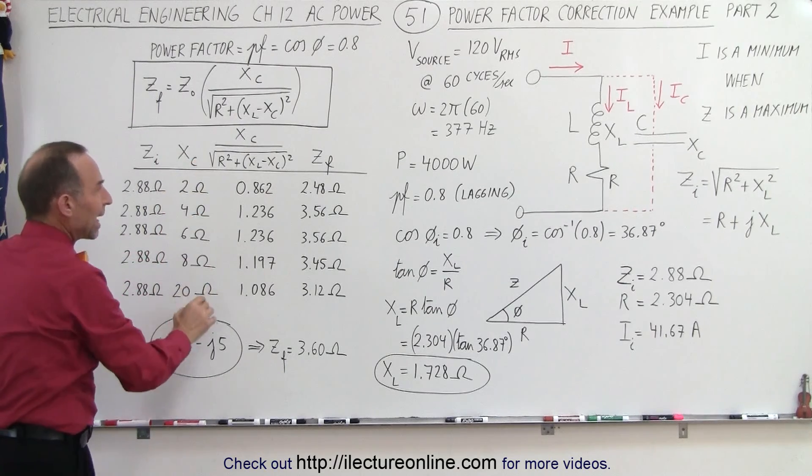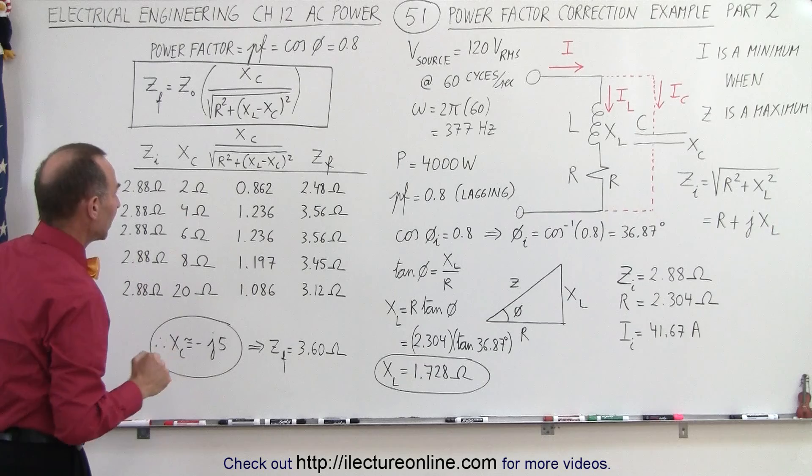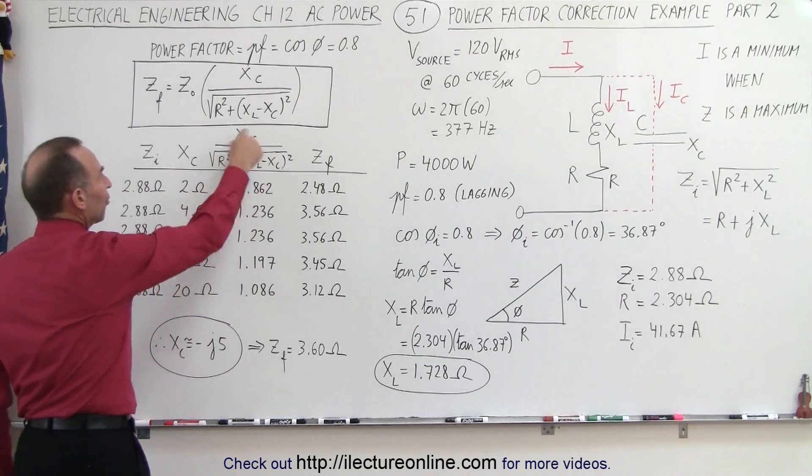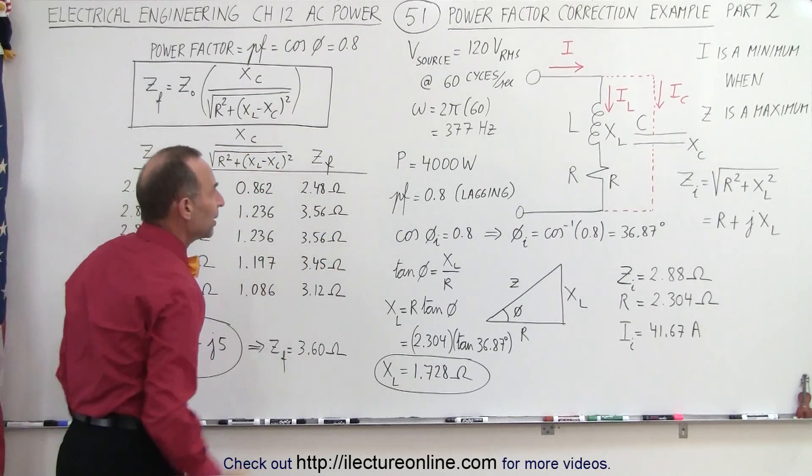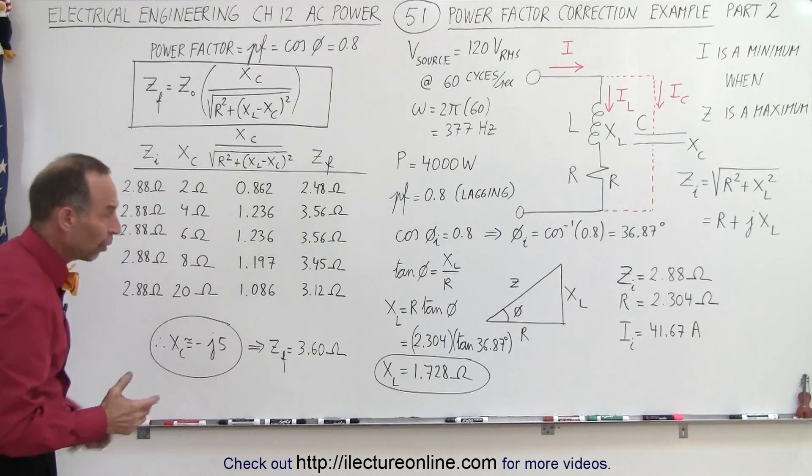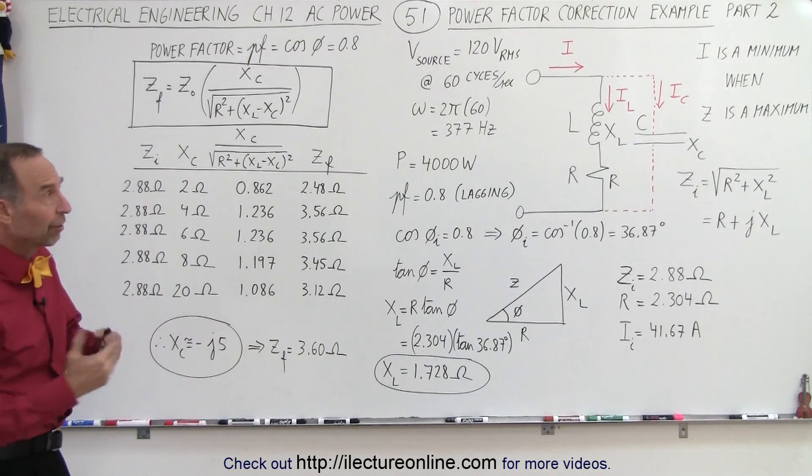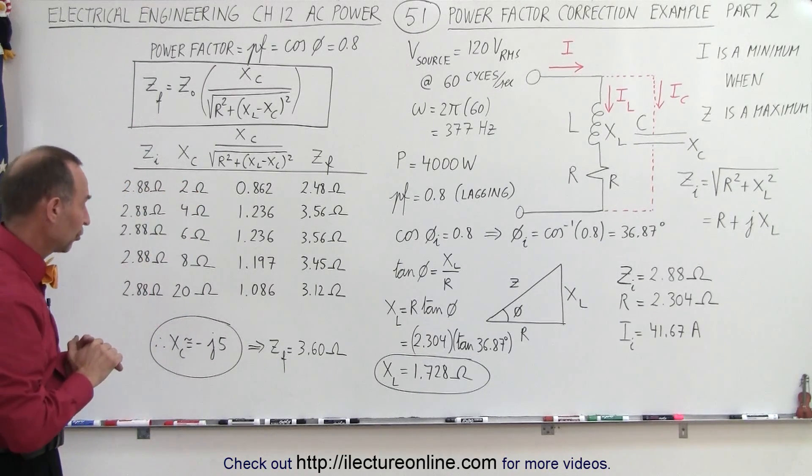Add some capacitive reactance to the circuit in parallel, then we calculate this factor and now we have our new impedance, the final impedance, hopefully a larger impedance, therefore requiring less current to the circuit.